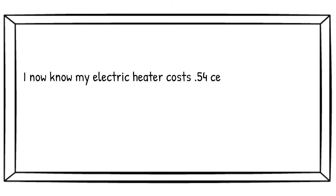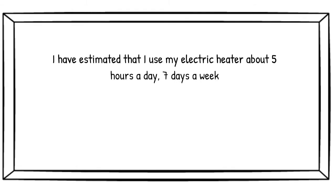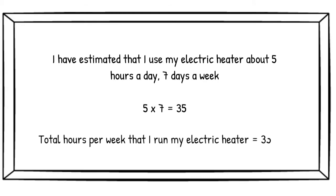Now that I know how much my heater costs to run per hour, I can use this information to calculate how much it costs me per week to run. Have a think about how many hours per week you're using your electrical appliance. I've estimated that I use my heater about 5 hours a day, 7 days a week, and 5 times 7 is 35. So in total, that's 35 hours a week that I'm using my heater.